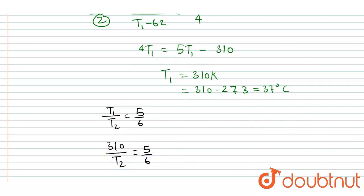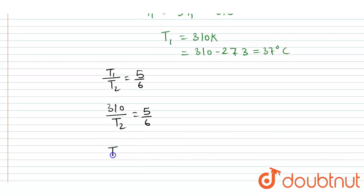by T₂ equals 5/6. Here T₁ is 310 by T₂ equals 5/6, so I will write T₂ equals 6/5 cross